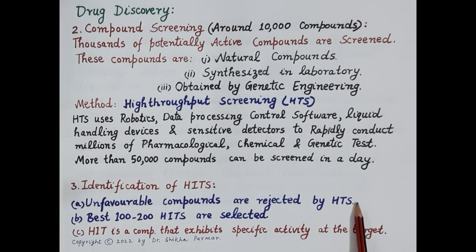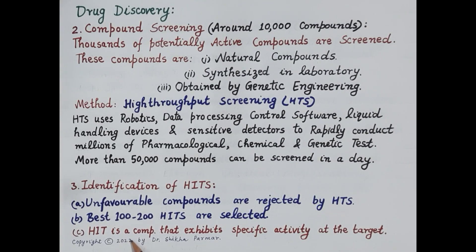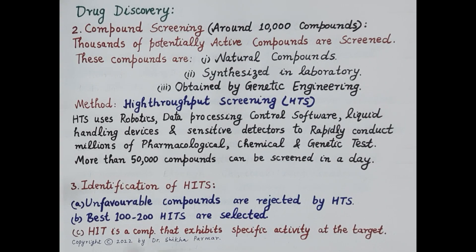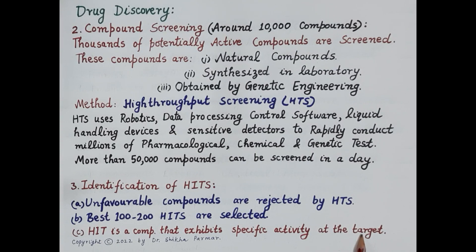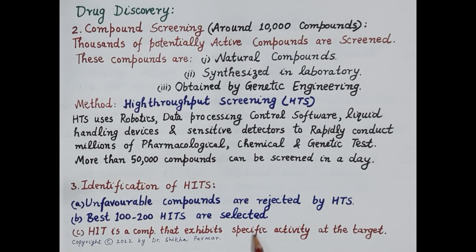These 100 to 200 compounds are called hits. Unfavorable compounds are rejected by high throughput screening while the best 100 to 200 hits are selected. A hit is a compound that exhibits selective or specific activity at the target, possessing both affinity and selectivity for the target.